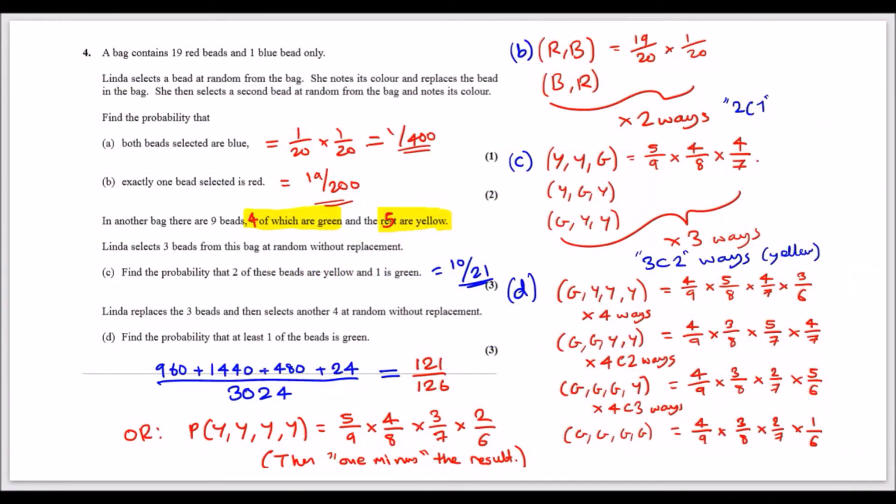Okay guys, question 4. A bag contains 19 red beads and one blue bead only, so 20 in total. Now Linda selects a bead at random from the bag, notes its color, and replaces the bead in the bag. So she replaces it, meaning we still have 20 beads altogether.